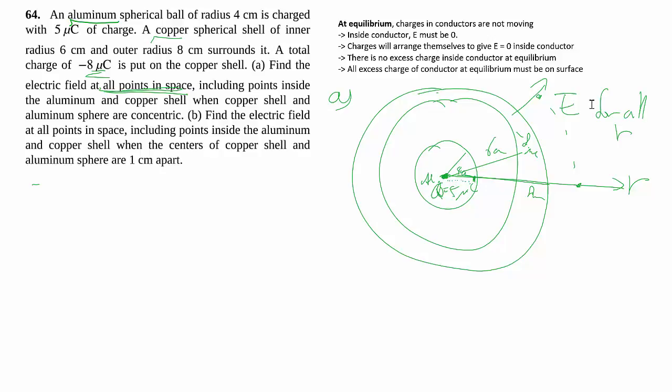There's various cases we have to take care of. Let's start from the center going outwards. First case is when you have r is greater than 0 but less than 4 cm, which is our way of saying inside the Al sphere. At equilibrium, inside the sphere that's conductive, E must be 0 for all those points, making it very simple.